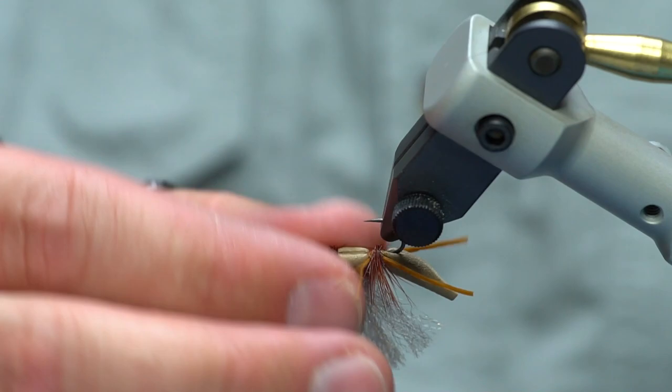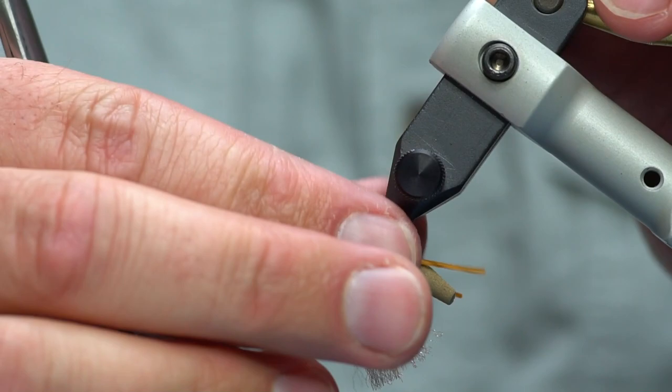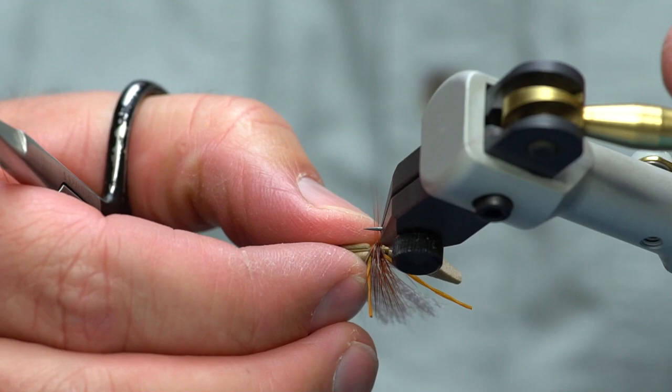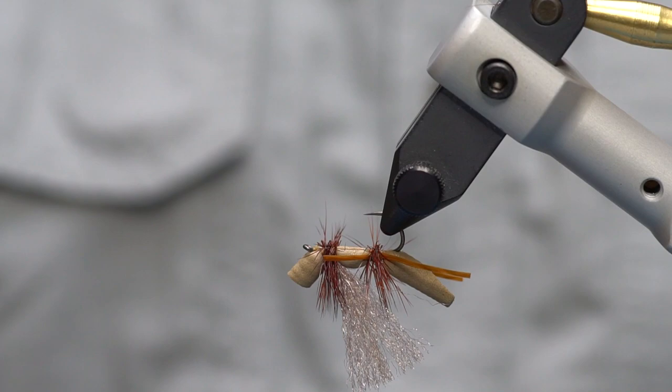I've still got a couple here that are standing out a little more than I like. Then once you get it to where it's nice and cut, see if you can get a side view, you can see it's basically almost flat on the bottom so that fly is going to land right side up every cast.